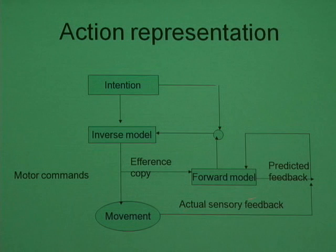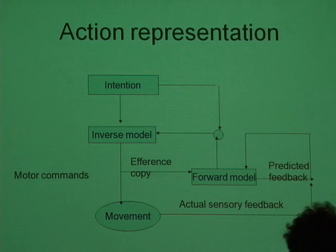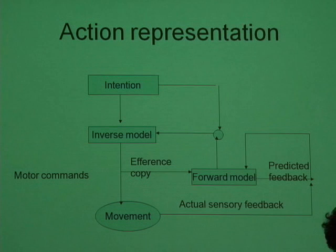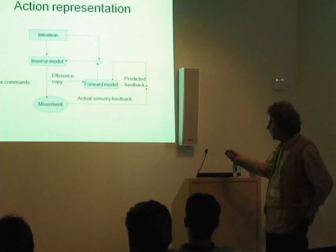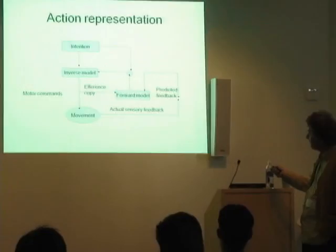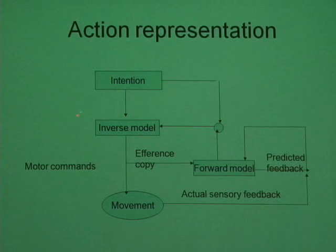Let me give you the action representation unit: intention, inverse model, efference copy. When the brain sends a signal for you to do a movement, that signal not only goes to the appropriate place so the movement can be executed, but a copy is kept — the efference copy. A copy is kept so that the system can do internal simulation. You have the intention, then the efference copy, and you can use a forward model to predict feedback — this is the internal simulation of the action. You can keep doing this as long as you want, then execute the movement and get actual sensory feedback to compare.